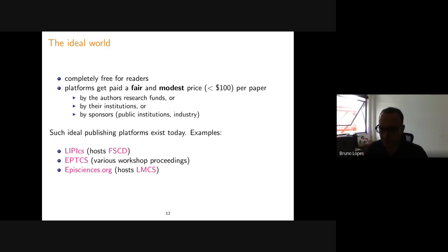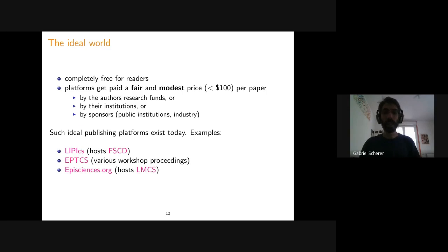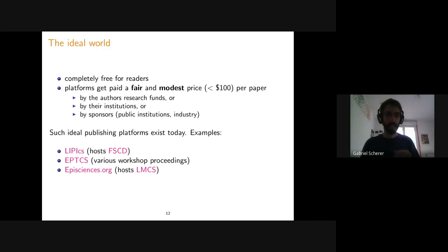The Brazilian Computer Society also has its own open access platform, which is now mandatory for all conferences affiliated to it. Some institutions have national archives — France has HAL, and I'm mandated by my employer to put a copy of every paper I publish on it. There's also an option to submit to HAL and automatically send it to arXiv, so you don't have to do the work twice. These platforms exist and it shows that it can be done.